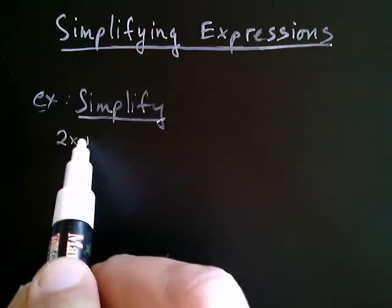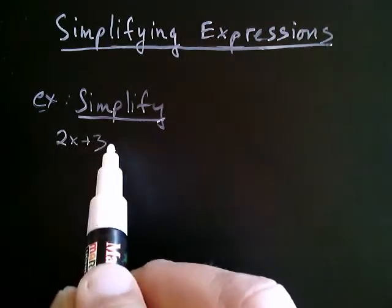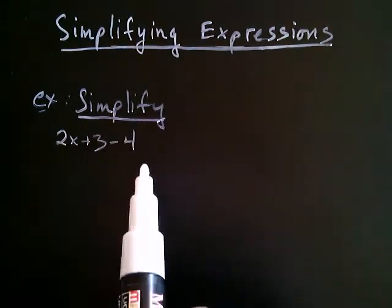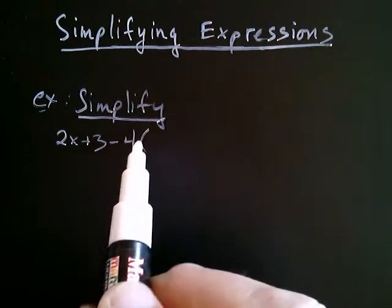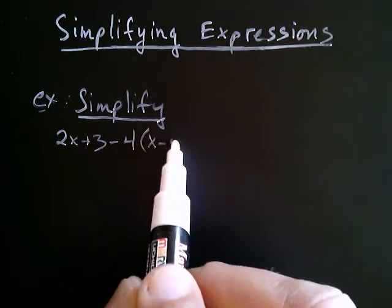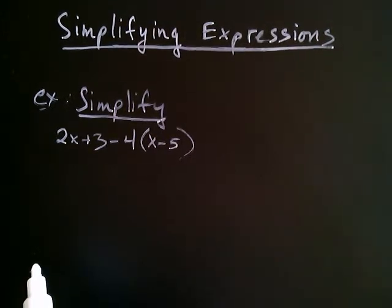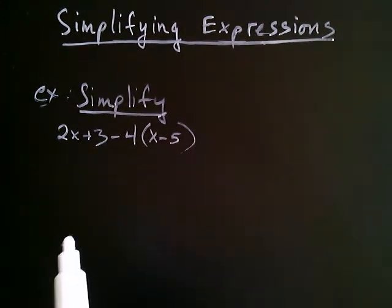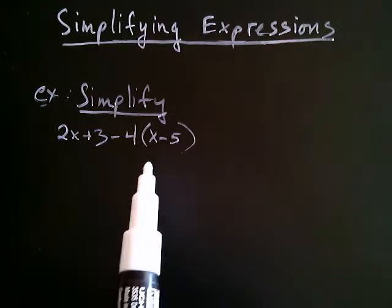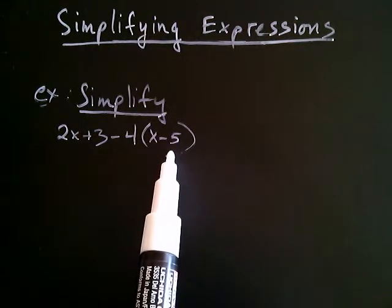2x plus 3 minus 4 times the quantity x minus 5. Okay, so the first thing we're going to do is we're going to note that because we don't know what the value of x is, we can't subtract 5 from it.